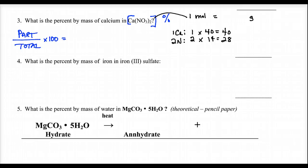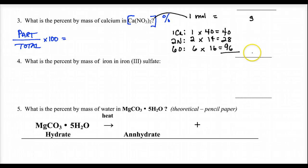How many oxygens? There are two nitrate polyatomic ions with three oxygens each, so 2 times 3 is 6 oxygens. Six times 16 is 96. Adding 40 plus 28 plus 96 gives a total of 164. That is the formula mass — but that's not the final answer. We still need the percent by mass.